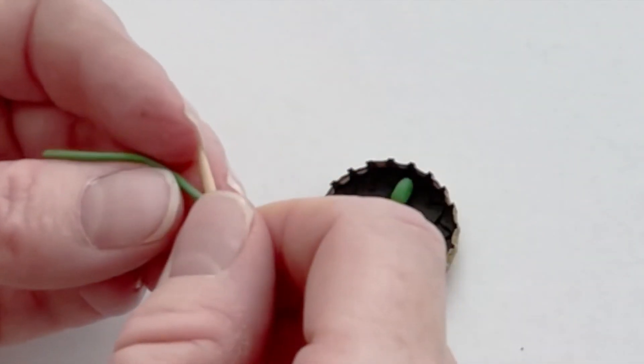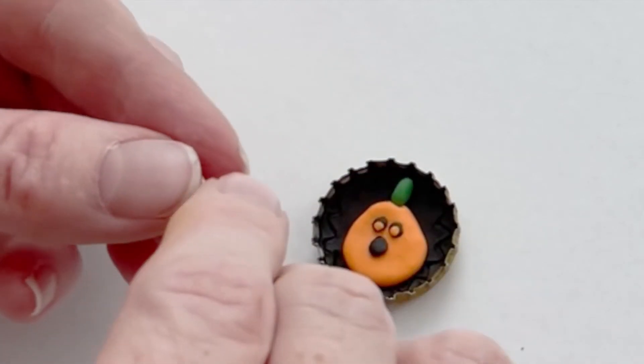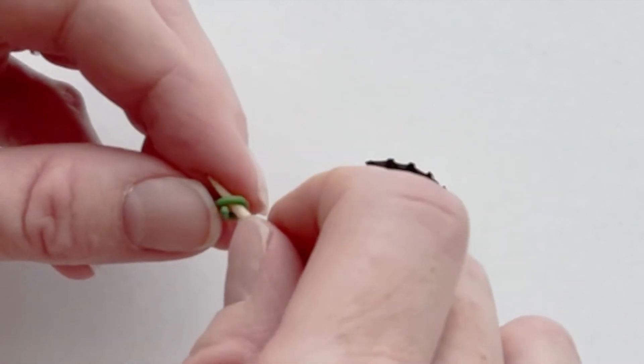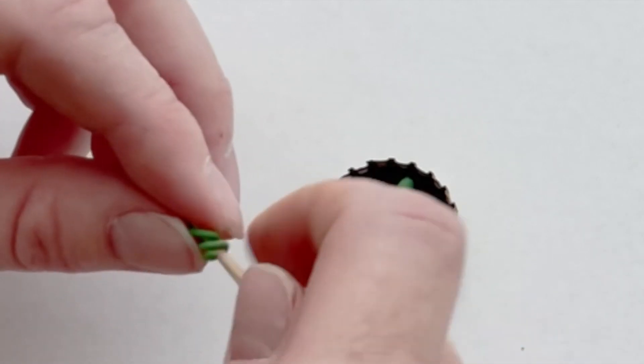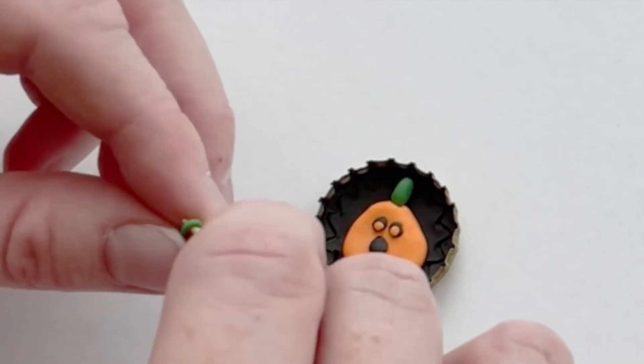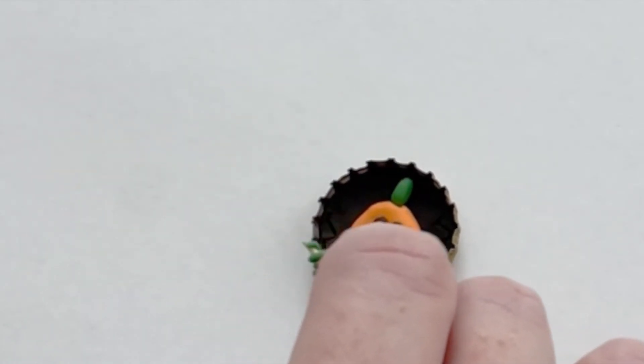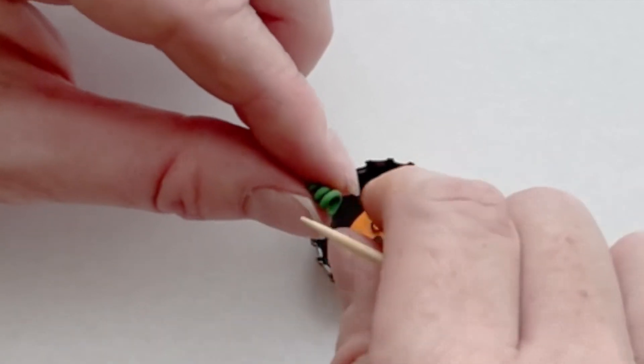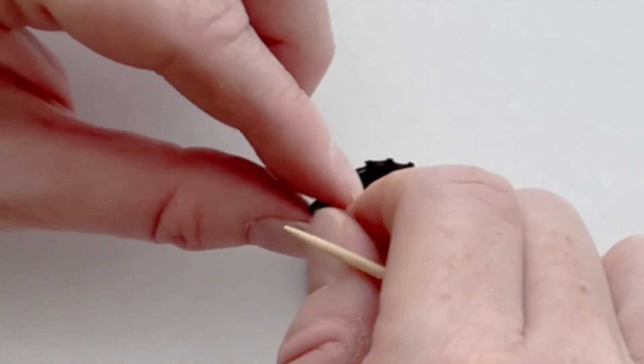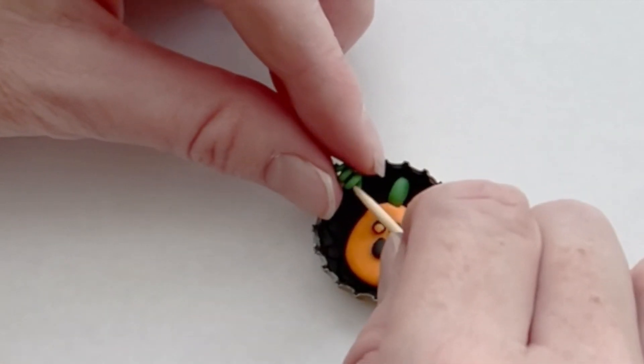Roll a small skinny snake of green clay and wrap it around the end of a toothpick to make a coil. Place the coil at the base of the stem of the pumpkin and use a toothpick to help you secure it in place.